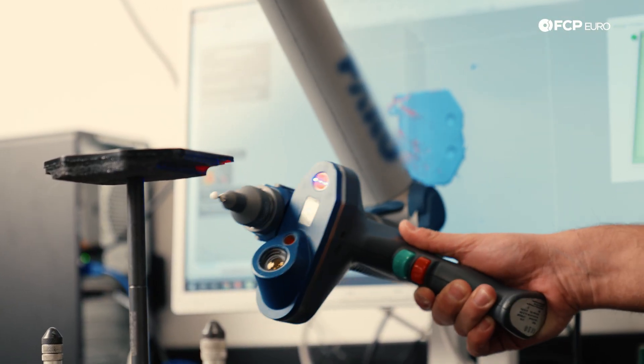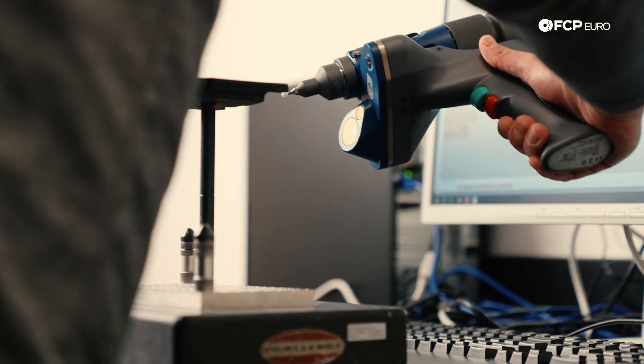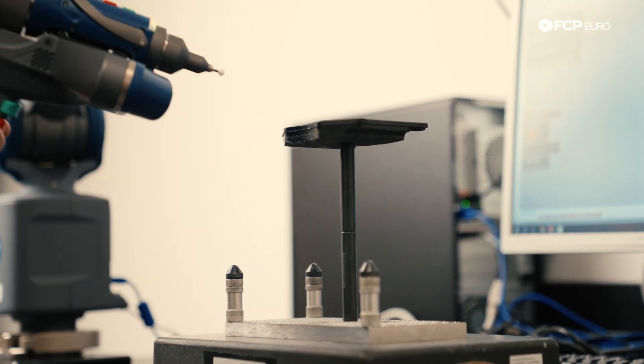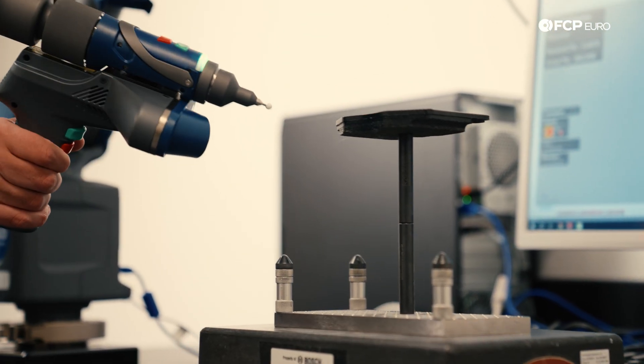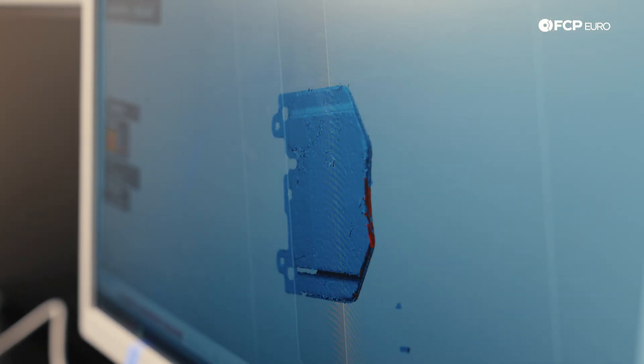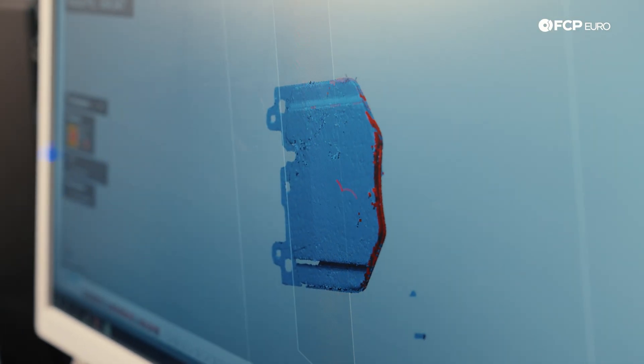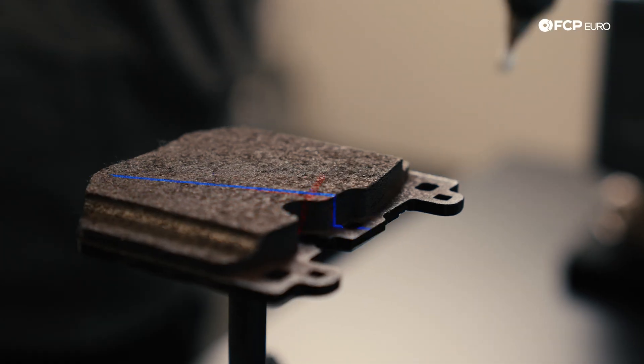OE pads are scanned as a baseline to work off of, measuring down to the micron level, which ensures brake pads are a direct OE replacement. One of the many ways a brake pad starts its life is running a dimensional check to ensure the brake pad is exactly the right shape and size.